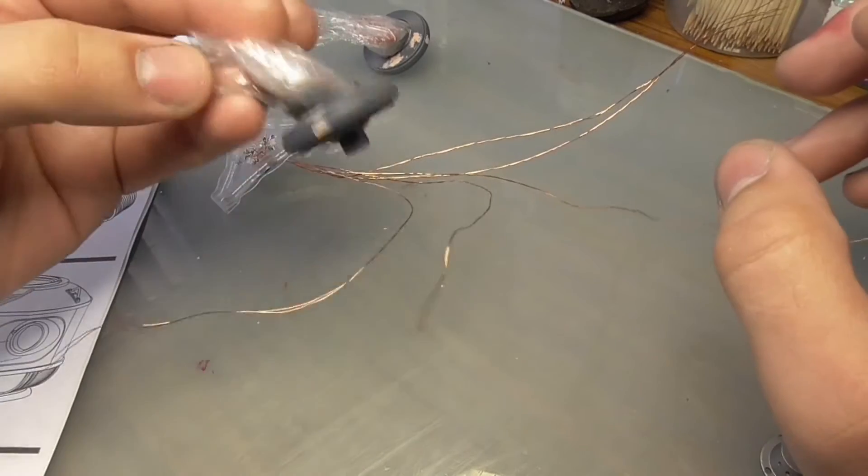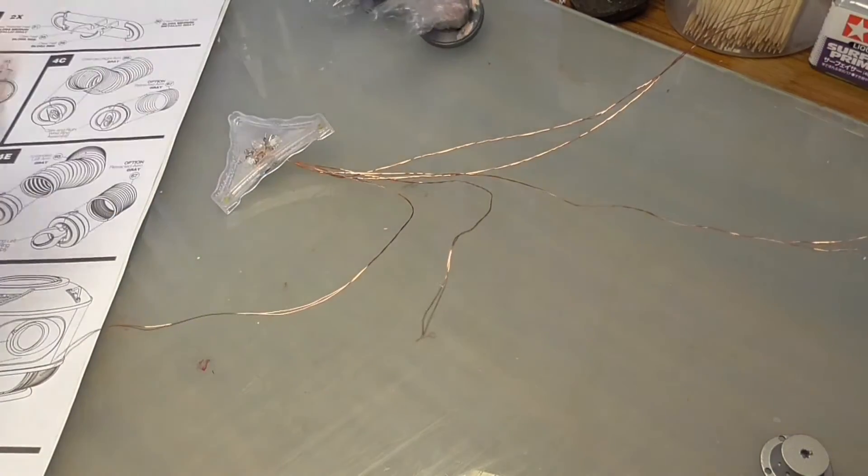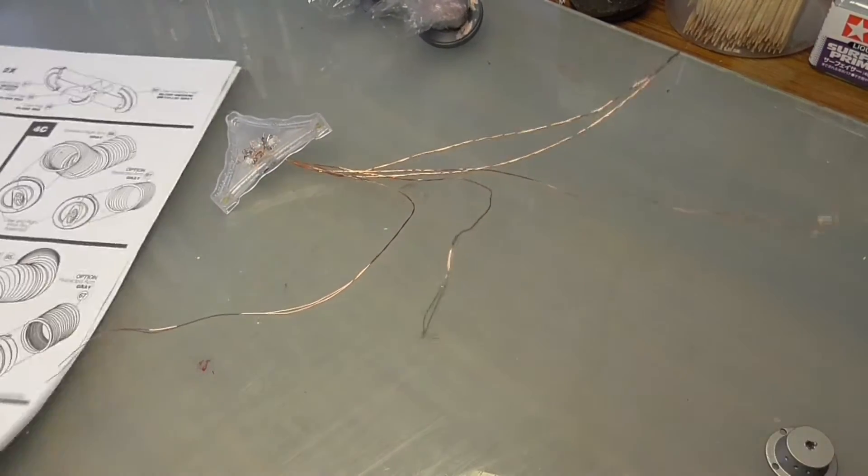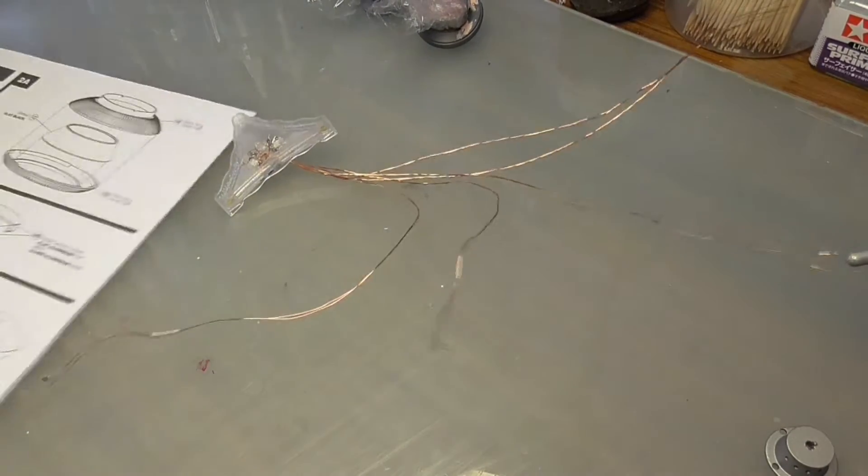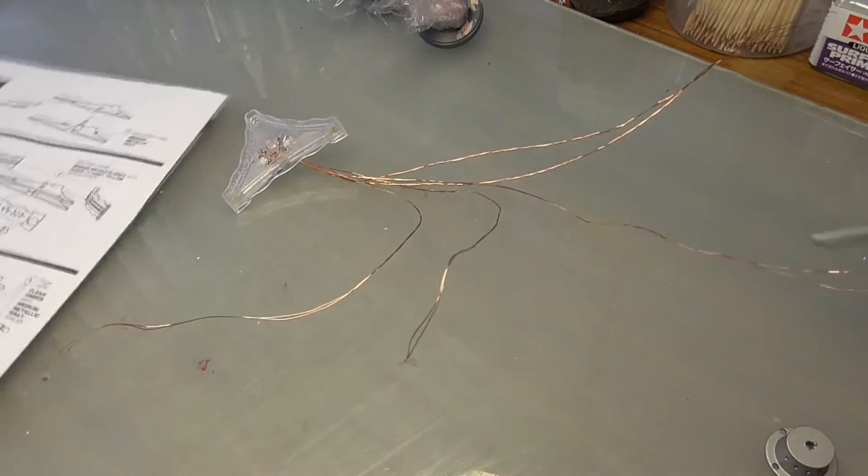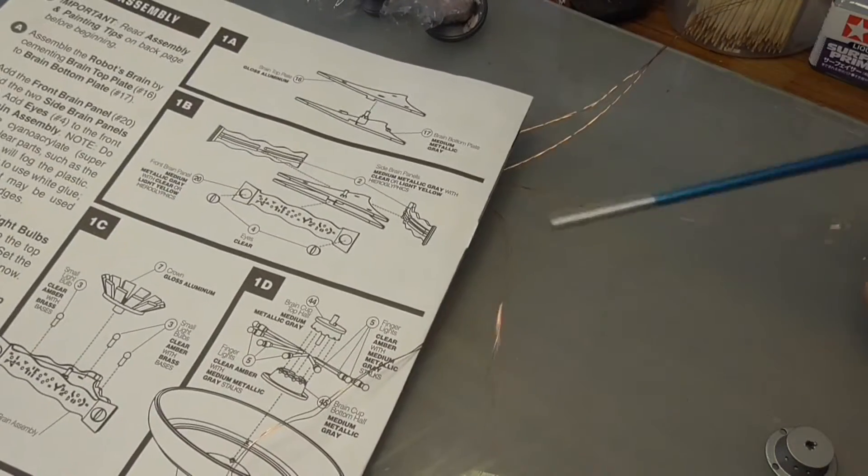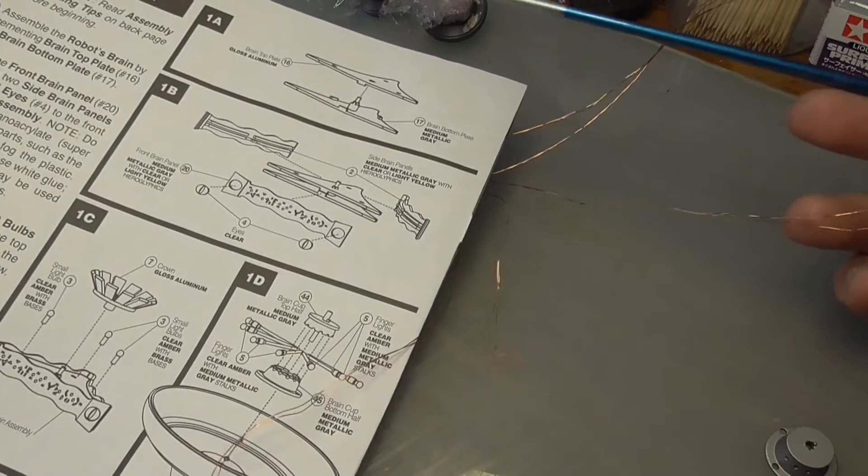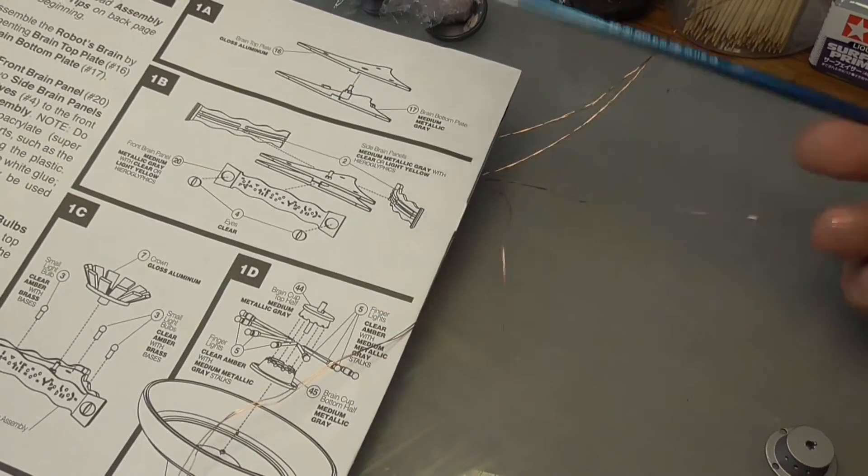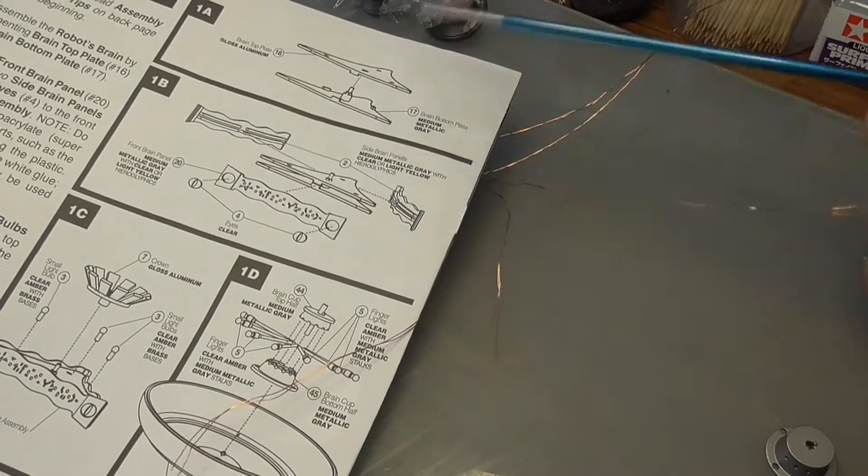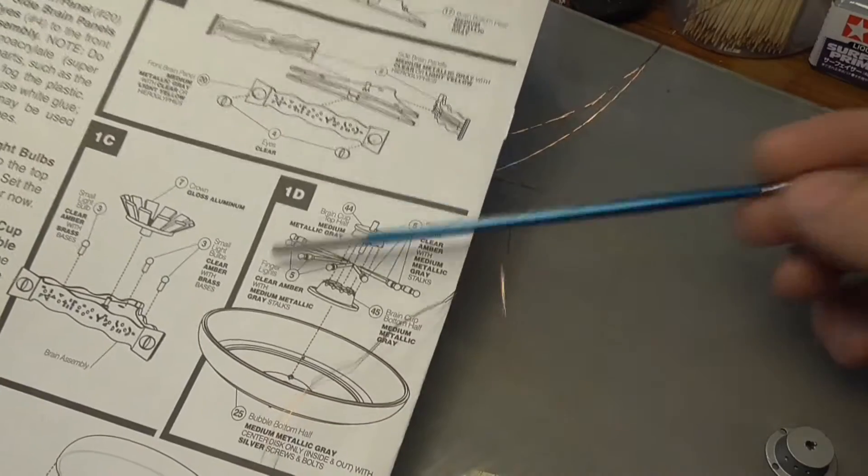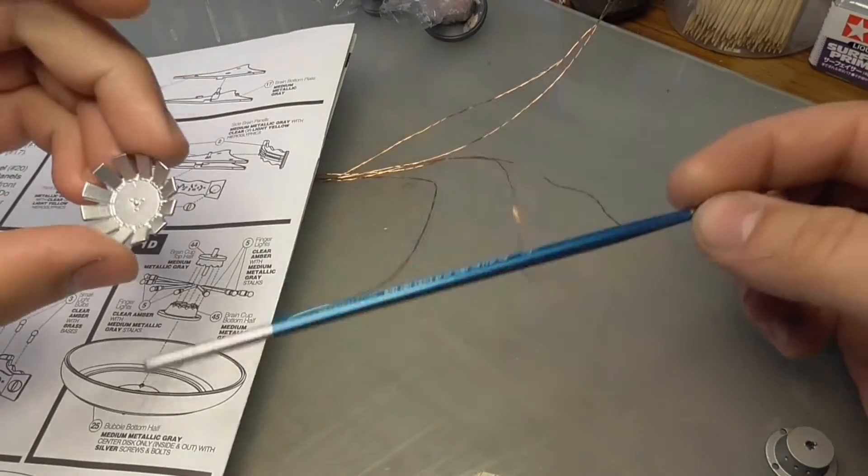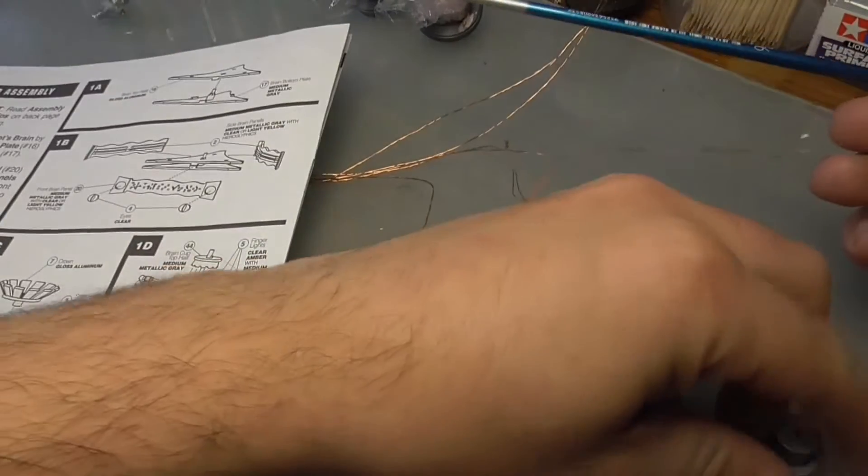I've started work on the brain piece, which is the first thing to do in the instructions. But there's a lot of electronics that go in here—a lot of lights, LEDs, and stuff—so I sort of left it to last. There's that piece there that I've just showed you which has been painted up. And we also have this piece here.